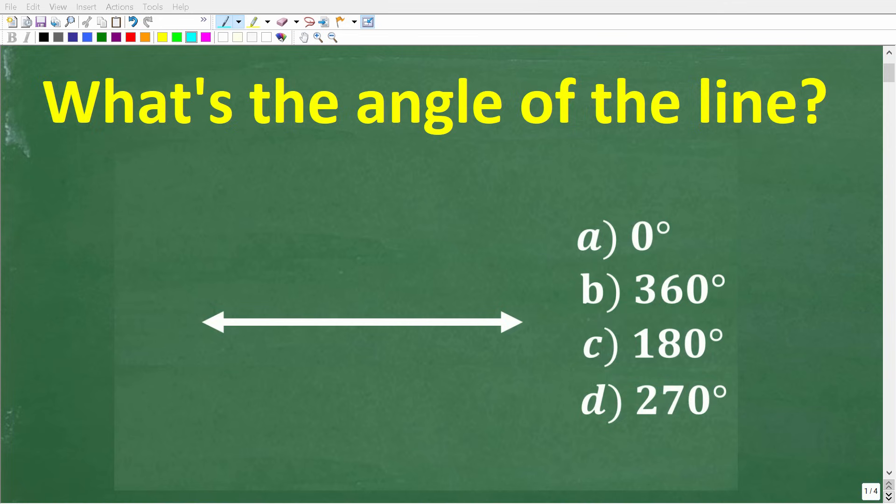This simple geometry question is going to stump a lot of people. Let's see if we can figure it out. So the question is, what's the angle of the line? We have a line right here and we're trying to determine the angle of the line. Now we do have a multiple choice question and let's take a look at our answers.